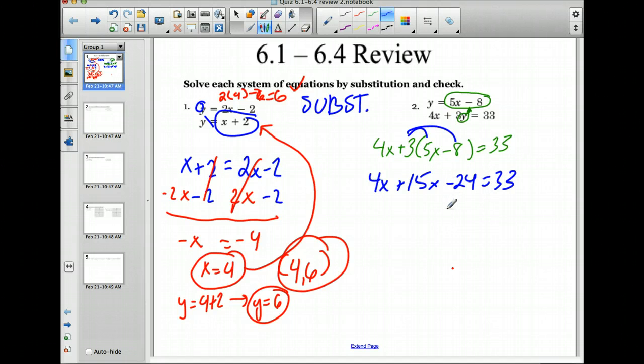So I would like to add 24 to both sides. And make sure you distribute to both here. It's a common mistake to not do that. So we combine like terms here and we have 19x equals 57. So divide both by 19 and we get x equals 3.